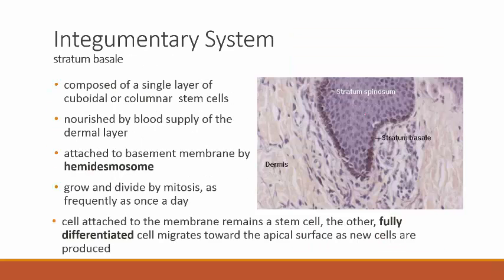The stratum basale is a single layer of primarily cuboidal cells. Even though the epidermis is a stratified squamous epithelium, down at the basal layers where cells are alive and actively dividing, they are cuboidal. They have a rich supply of nutrients and oxygen diffusing across from the connective tissue below, and are attached to the basement membrane by hemidesmosomes — essentially half-desmosomes.